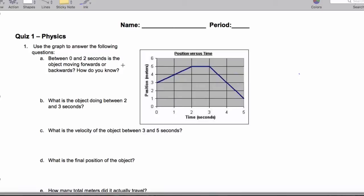So between 0 and 2 seconds, is the object moving forwards or backwards? Definitely moving forwards. In a lot of ways we can see this, we can say that its position value increases. Another way we can say it is that it has positive slope. Either one of these is correct answers.